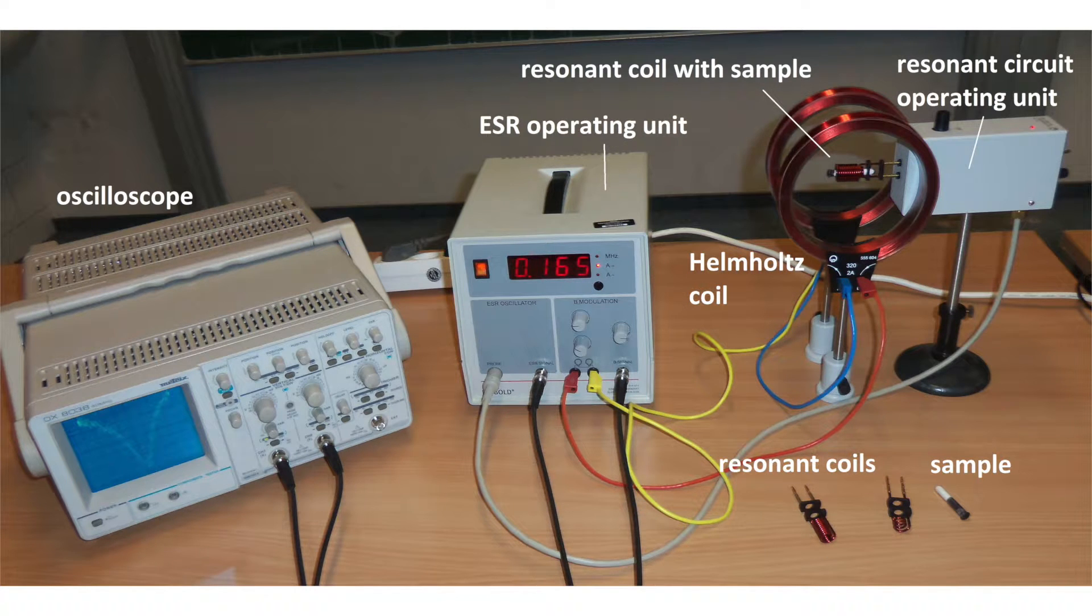The experimental setup comprises a Helmholtz coil, a resonance circuit or LC circuit operating unit with its three resonant coils, the ESR operating unit, an oscilloscope, and a sample.